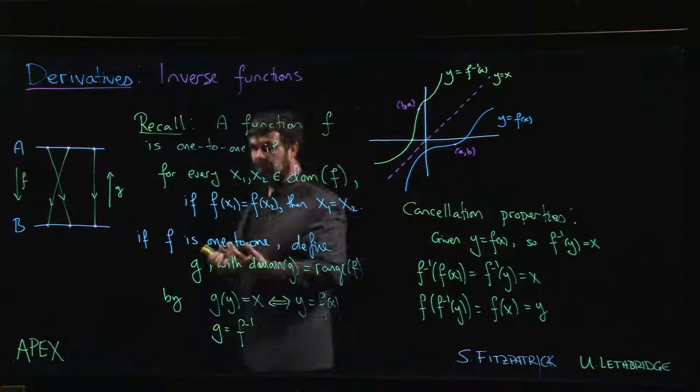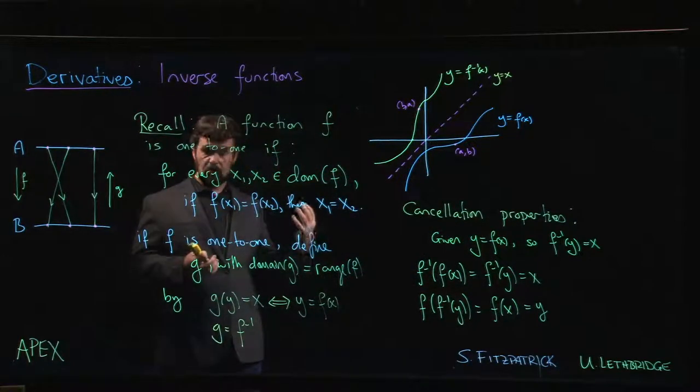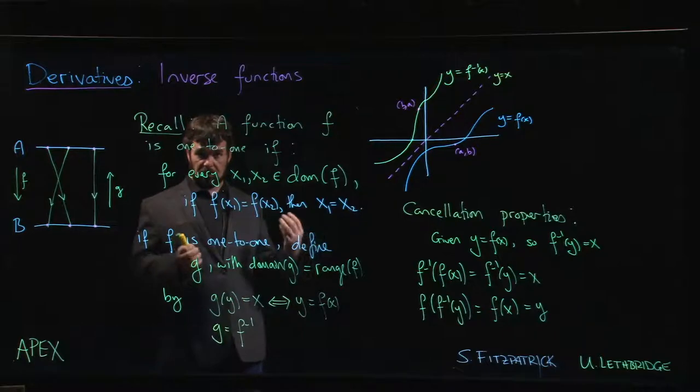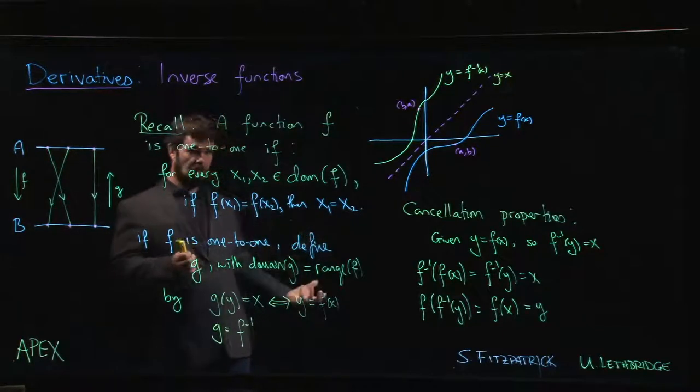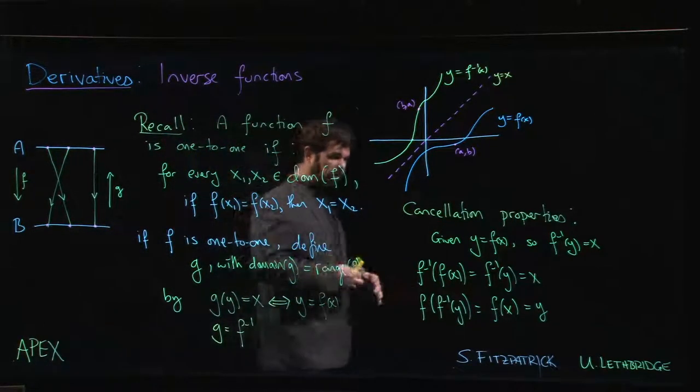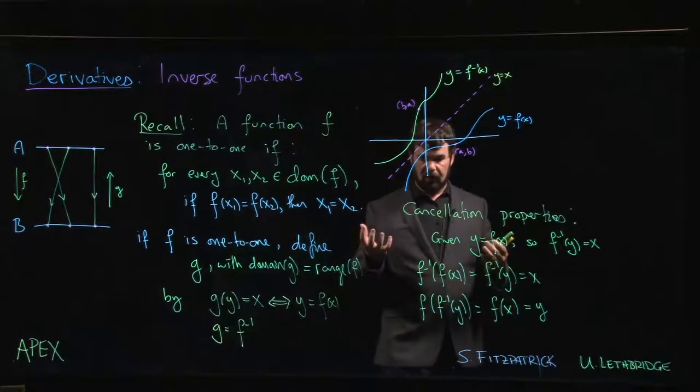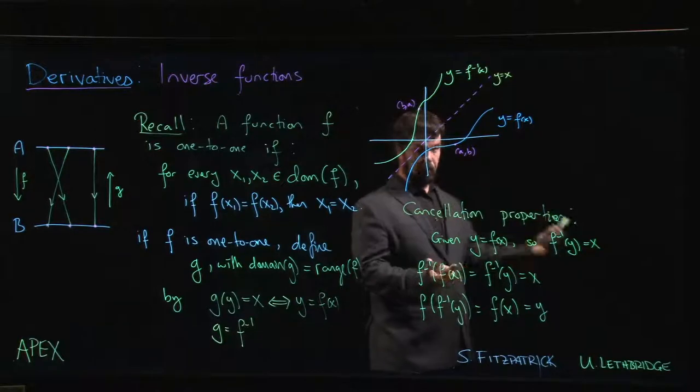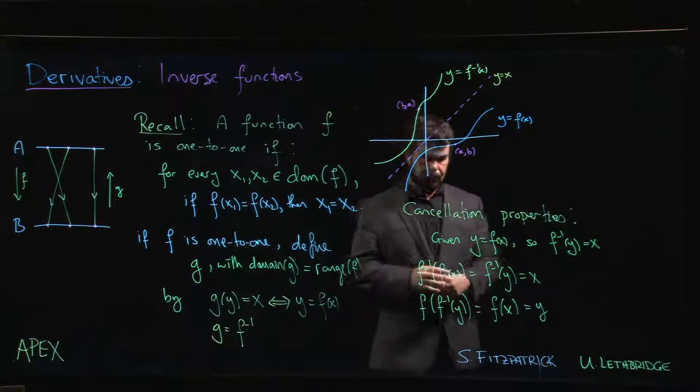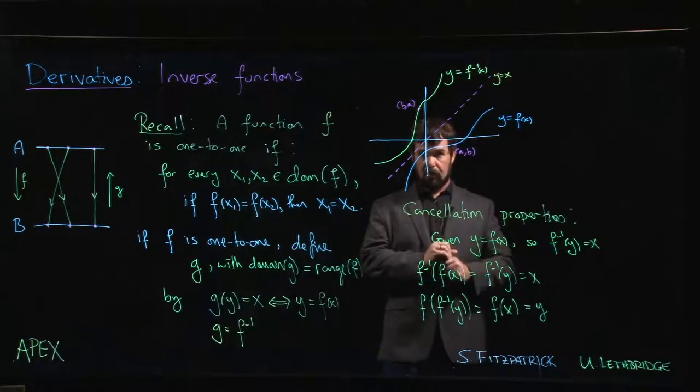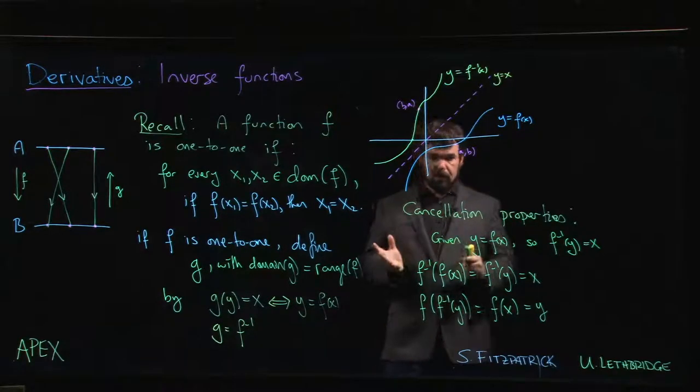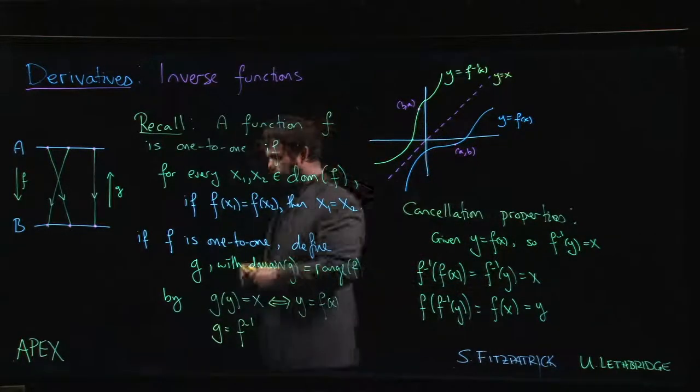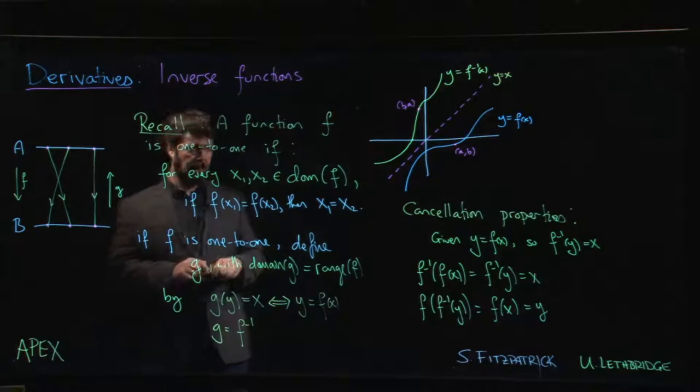So this is the sense in which these are inverses. They're inverses with respect to function composition. So if you compose a function with its inverse, they cancel out, and they leave you with what's called the identity function, the function that just does nothing to the input. These cancellation properties are often useful when you're working with inverse functions.